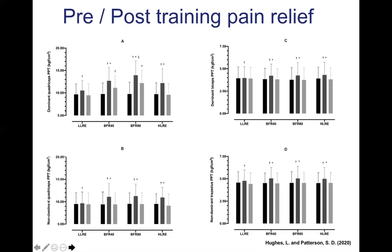Our group has tried to explain why, measuring pressure pain threshold before, five minutes post, and 24 hours after either low load exercise, blood flow restriction at 40 and 80 percent of limb occlusive pressure, and heavy load training — assessed in the exercise leg, the non-exercise leg, the biceps, and the trapezius. Briefly, all exercise acutely improved pain sensitivity in the exercise muscle as well as remotely in the opposing limb and upper body, but only for the first five minutes post exercise. However, blood flow restriction significantly improved pain sensitivity for up to 24 hours at both 40 and 80 percent limb occlusive pressure, with the 80 percent group having the greatest impact.